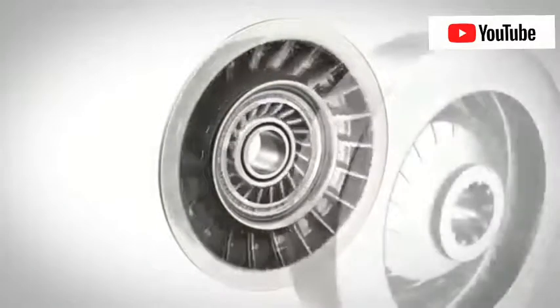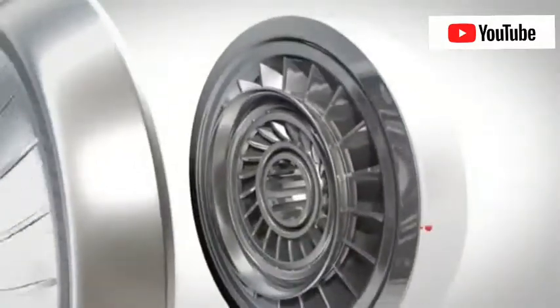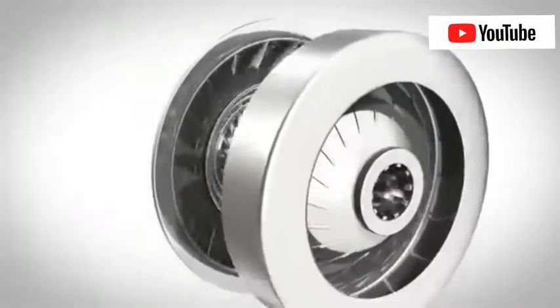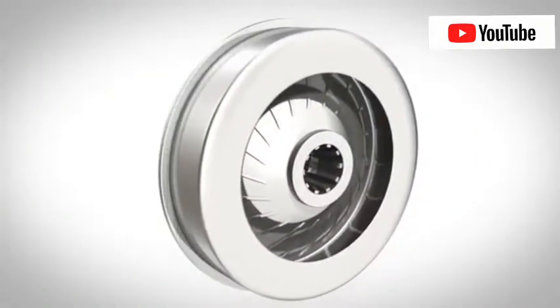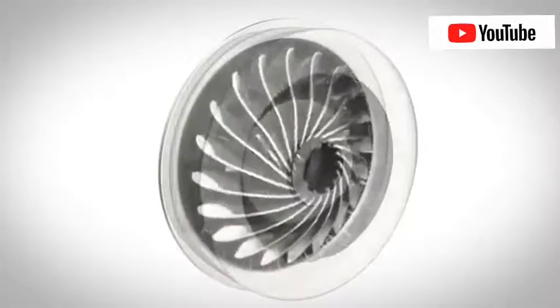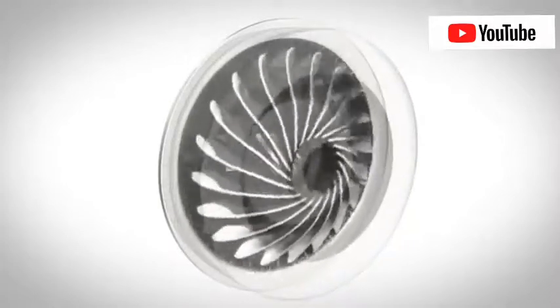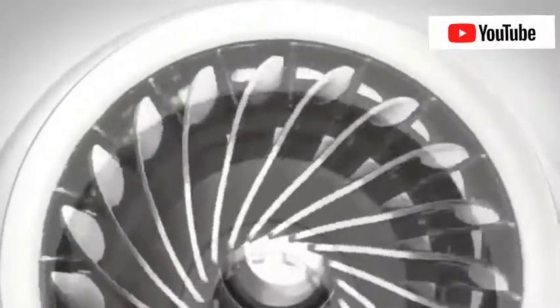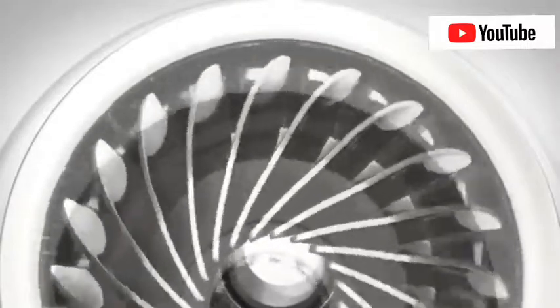The turbine is situated opposite to the impeller. In fact, you could say that the turbine is an impeller rotated by 180 degrees. The fluid flow from the impeller is directed over the blades of the turbine, so the turbine rotates.